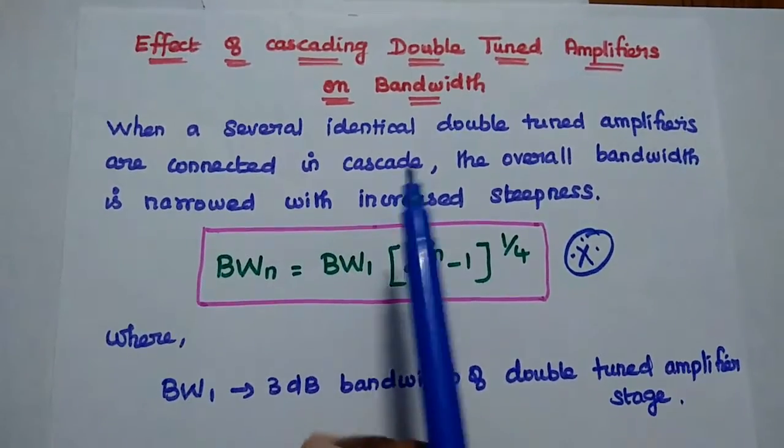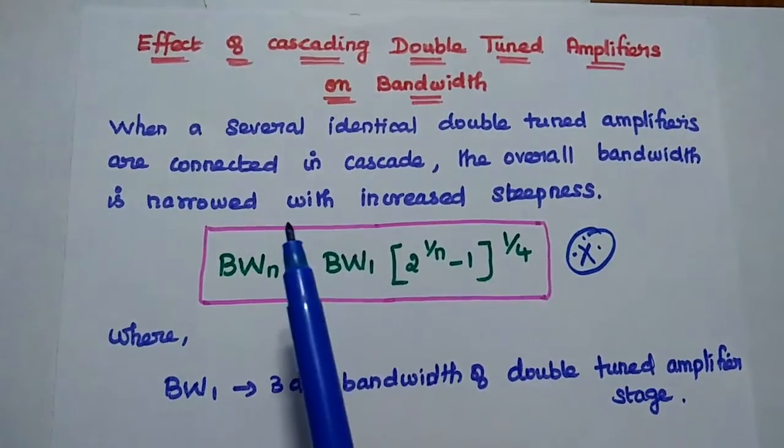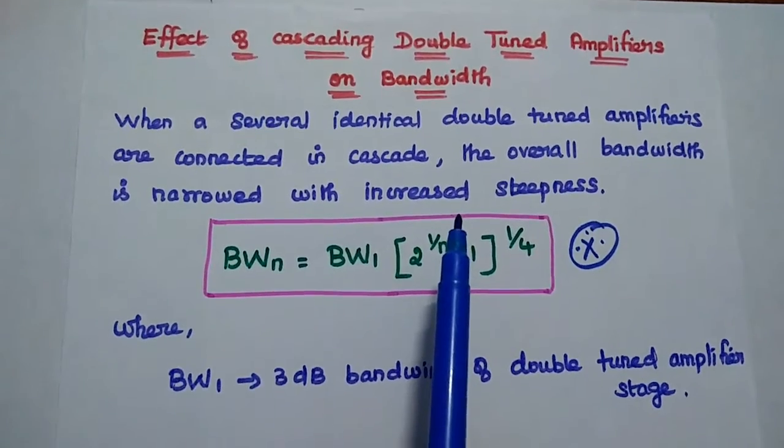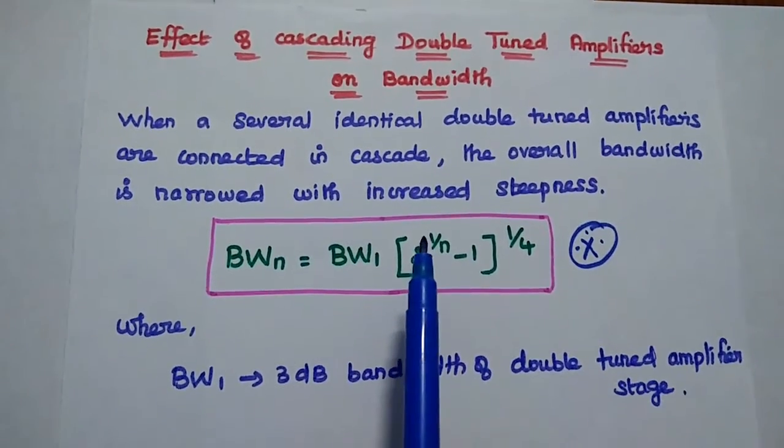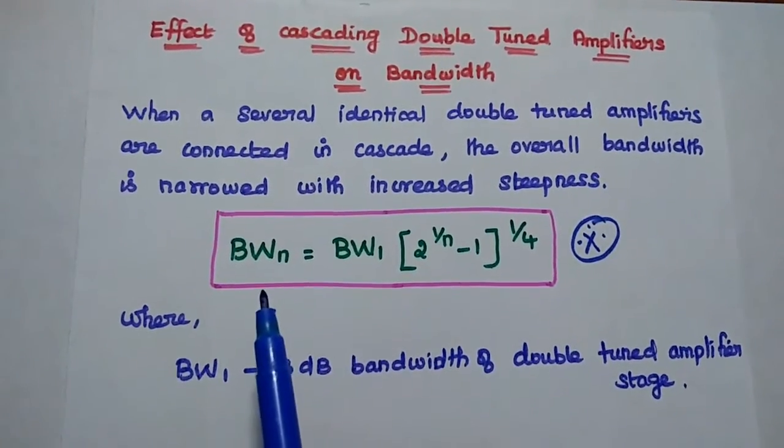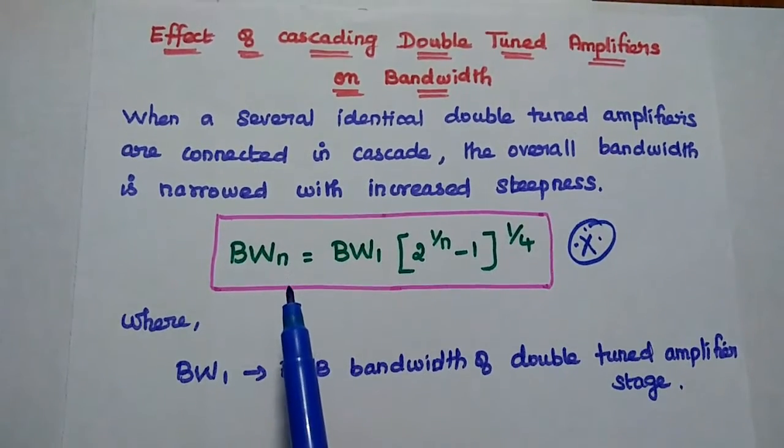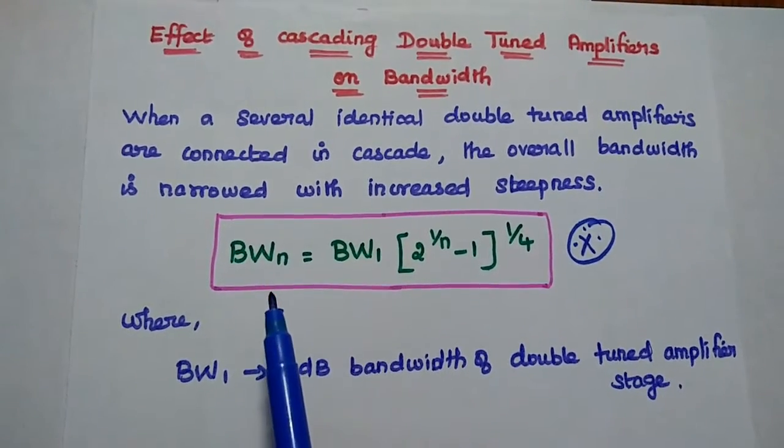When several identical double tuned amplifiers are connected in cascade, the overall bandwidth is narrowed with increased steepness. Here the bandwidth for n-stage double tuned amplifier is given as